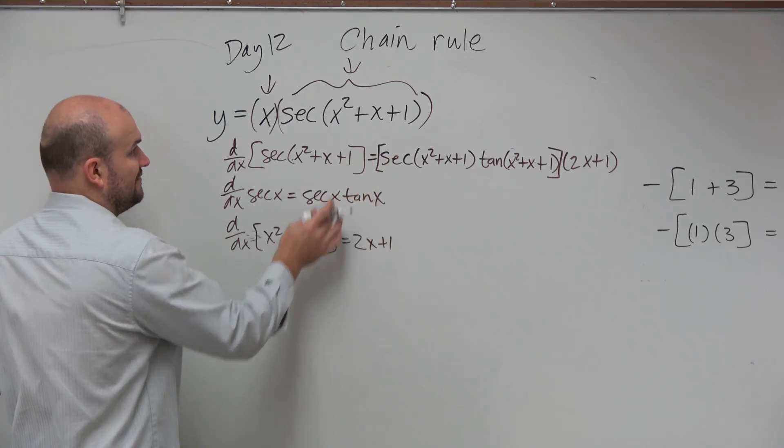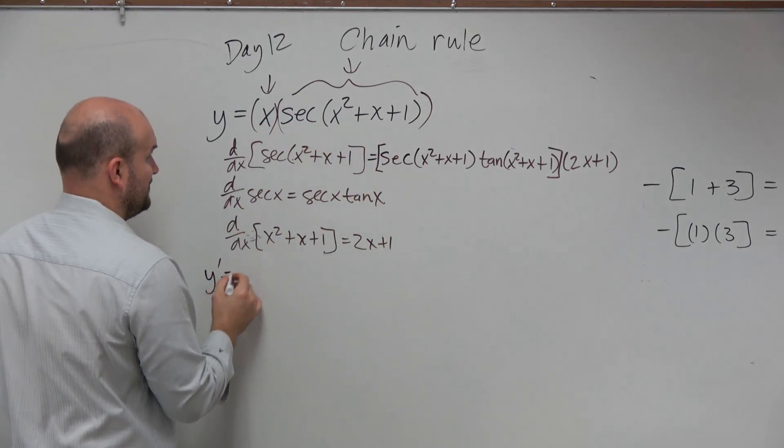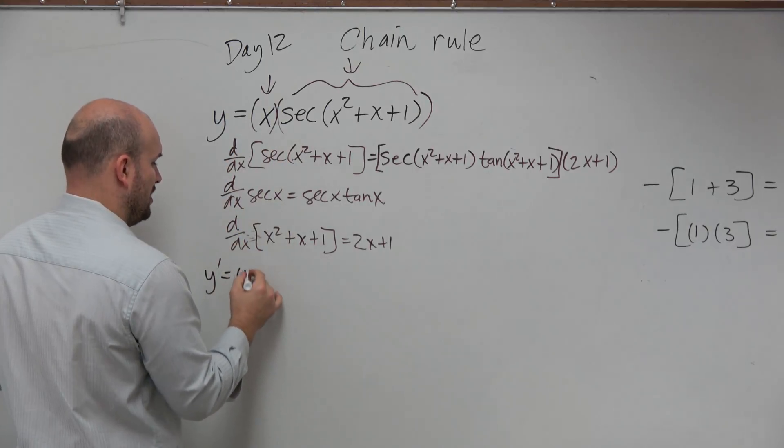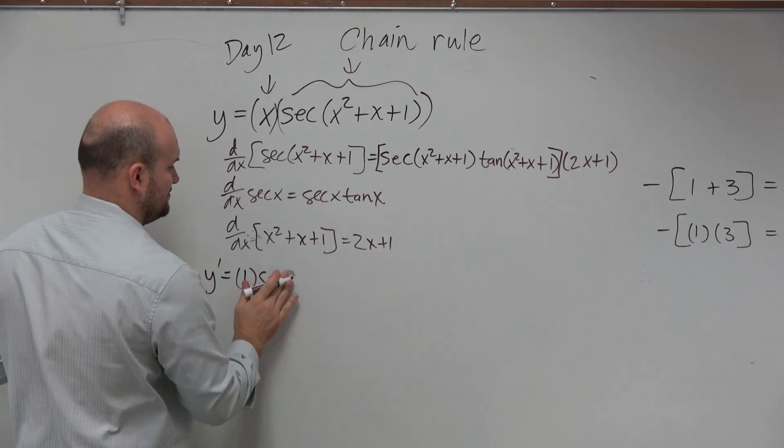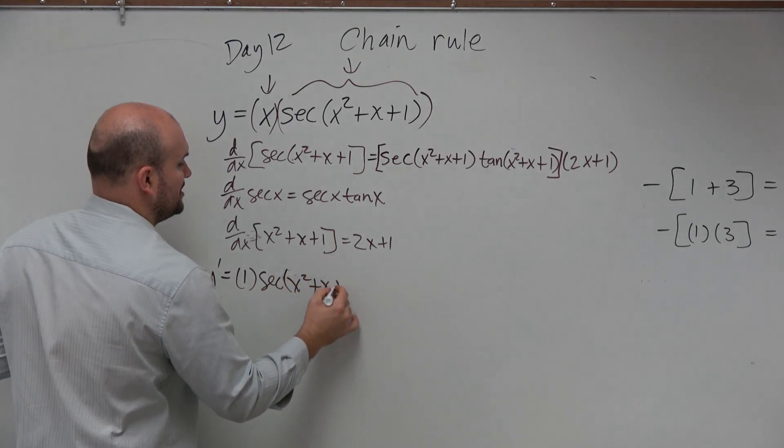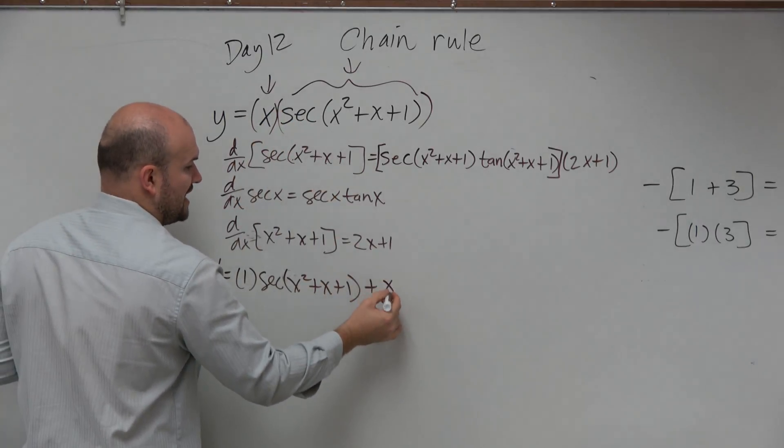So now, if I want to find the derivative here, first thing, I'm going to find the derivative of my first expression, which is just 1, times my second function, secant of x² + x + 1, plus my first function x,